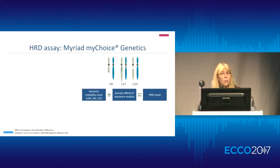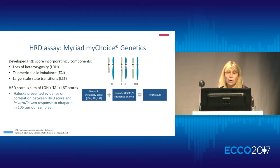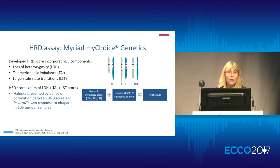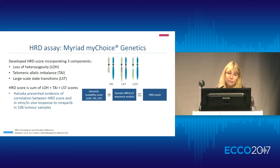Another solution, a little bit more complex, is the myChoice test. It is a compilation of several genomic anomalies: they explore the loss of heterozygosity, a single allele anomaly, telomeric allelic imbalance - which is a difference between the 1:1 ratio of the maternal and paternal allele specifically in the region of the telomere - and large-scale state transition, which is a difference between two different adjacent regions in the same chromosome. All of these abnormalities combined with the BRCA mutation can be reported as a test able to identify the tumor with HRD - the best candidate for PARP inhibitor.